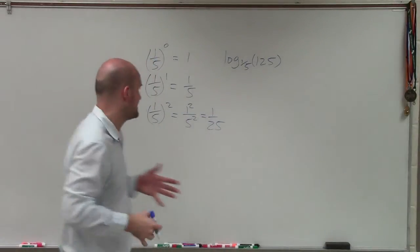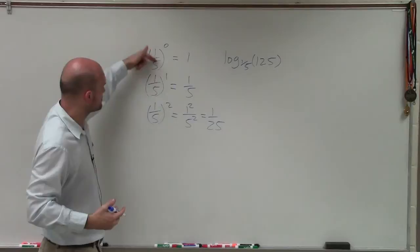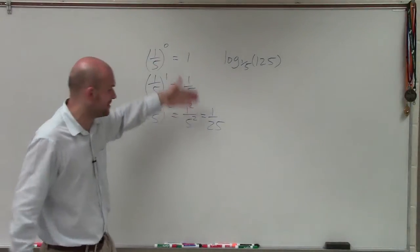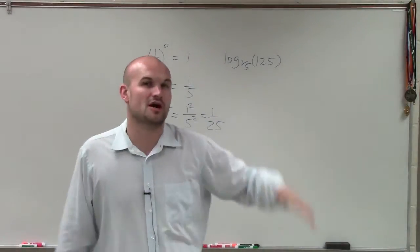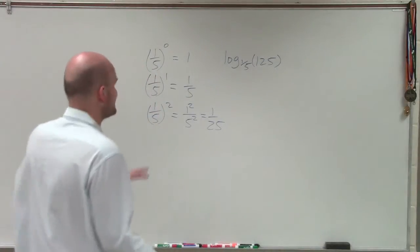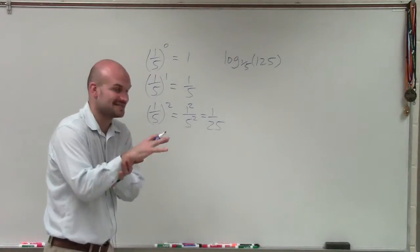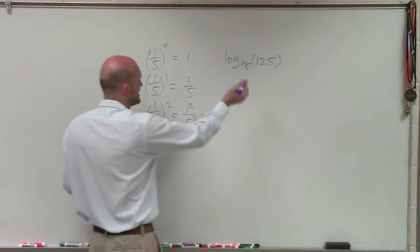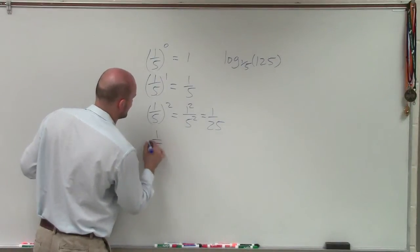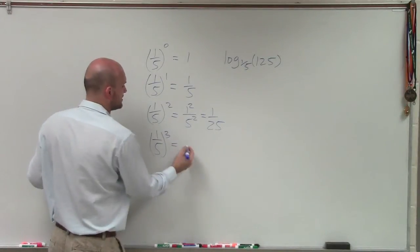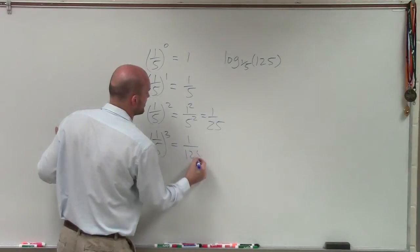So again, what hopefully you'll understand is this pattern. 1 is always going to be in my numerator, but I'm just going to keep getting larger and larger numbers in my denominator. I need some way to flip that so that it's positive. And let's even look at 1/5 to the third degree. That's going to equal 1/125.